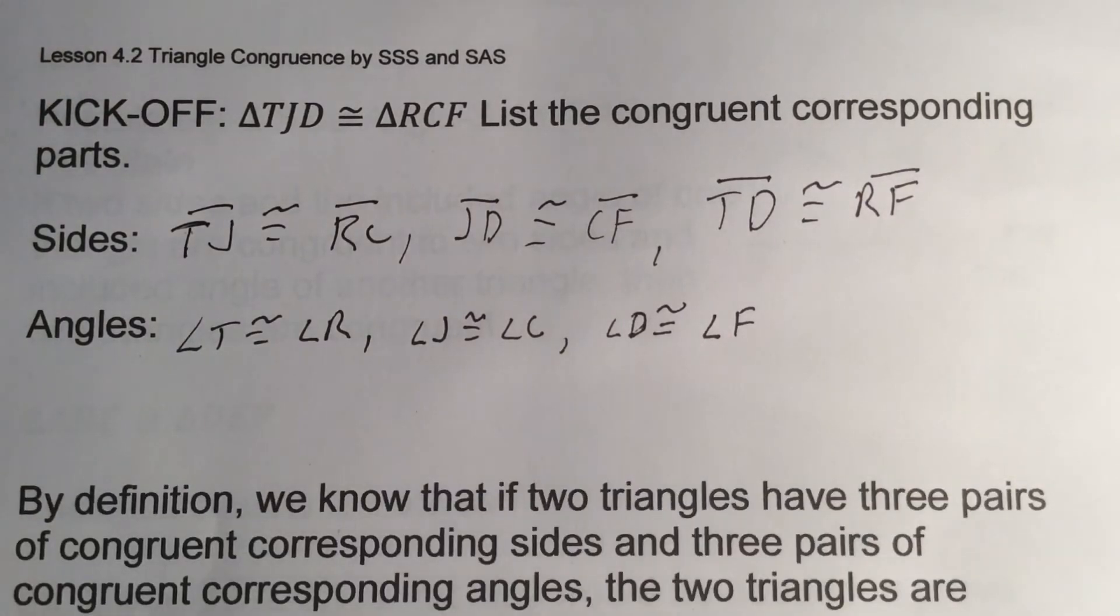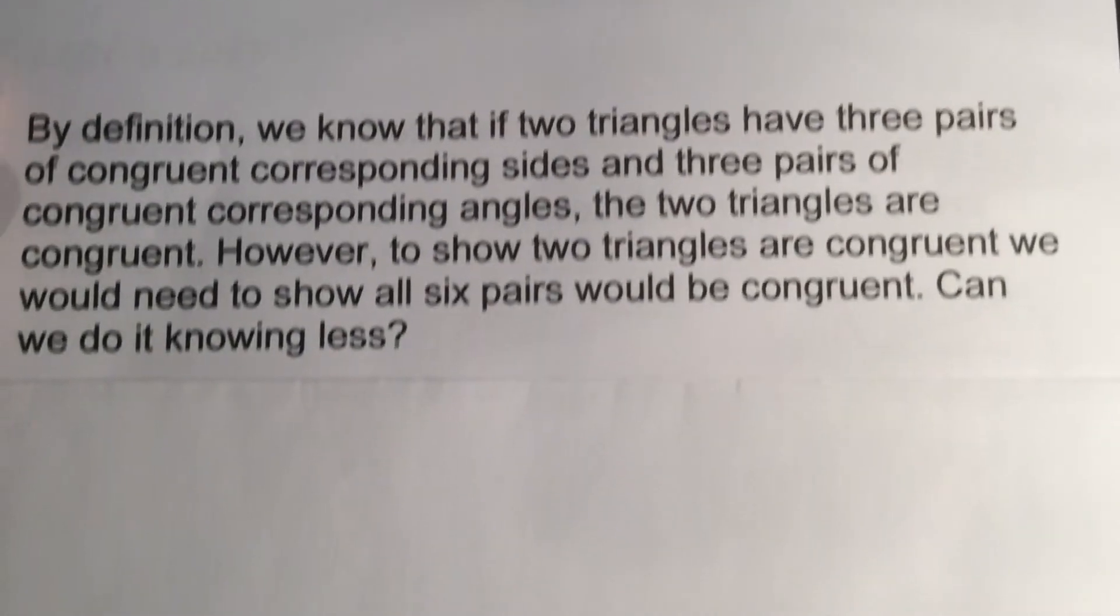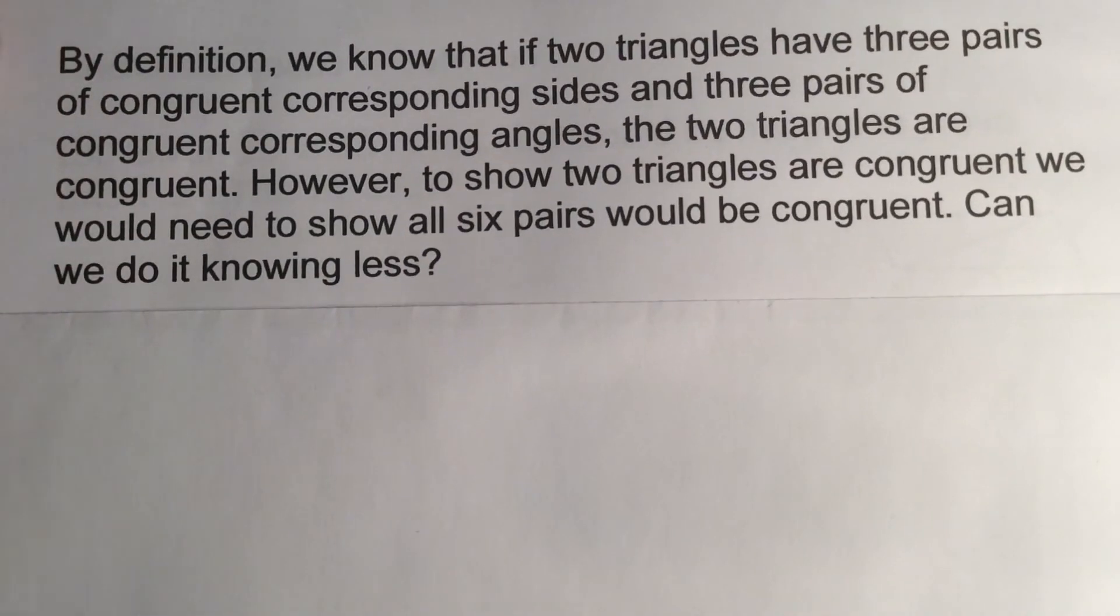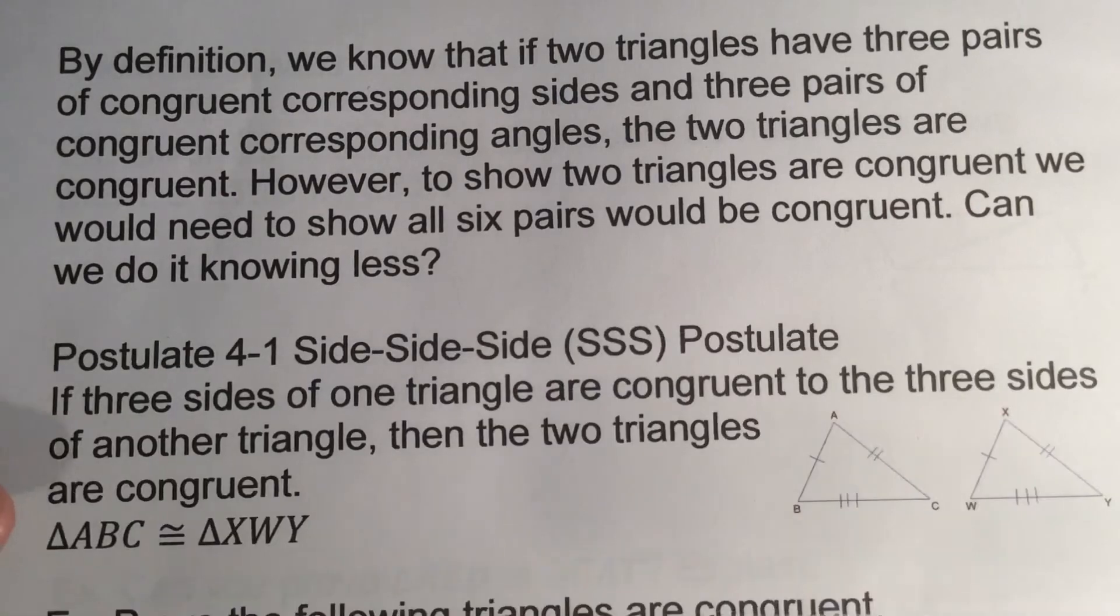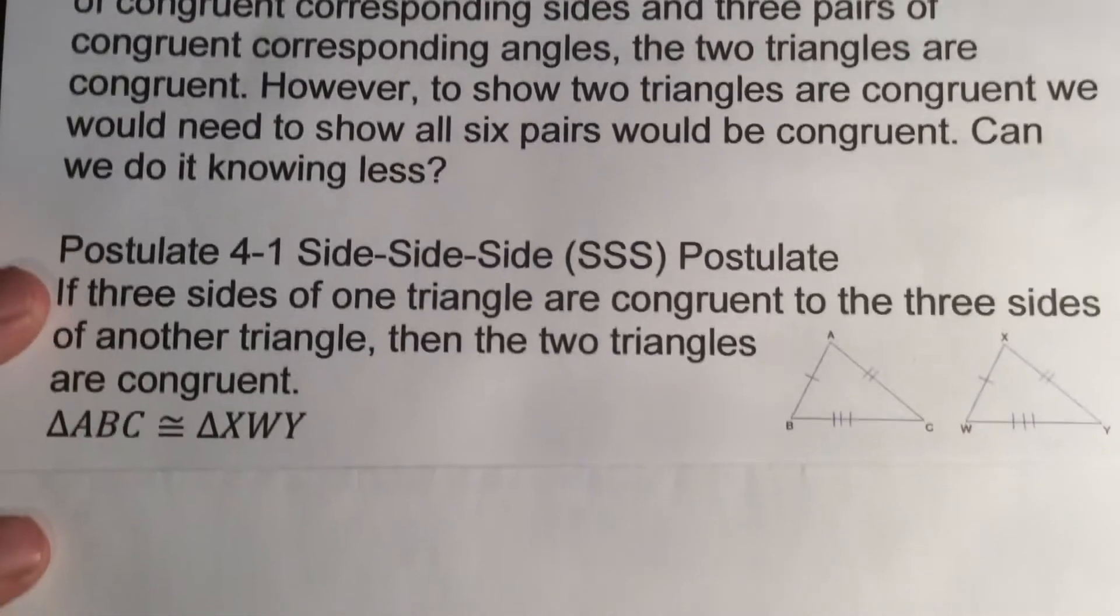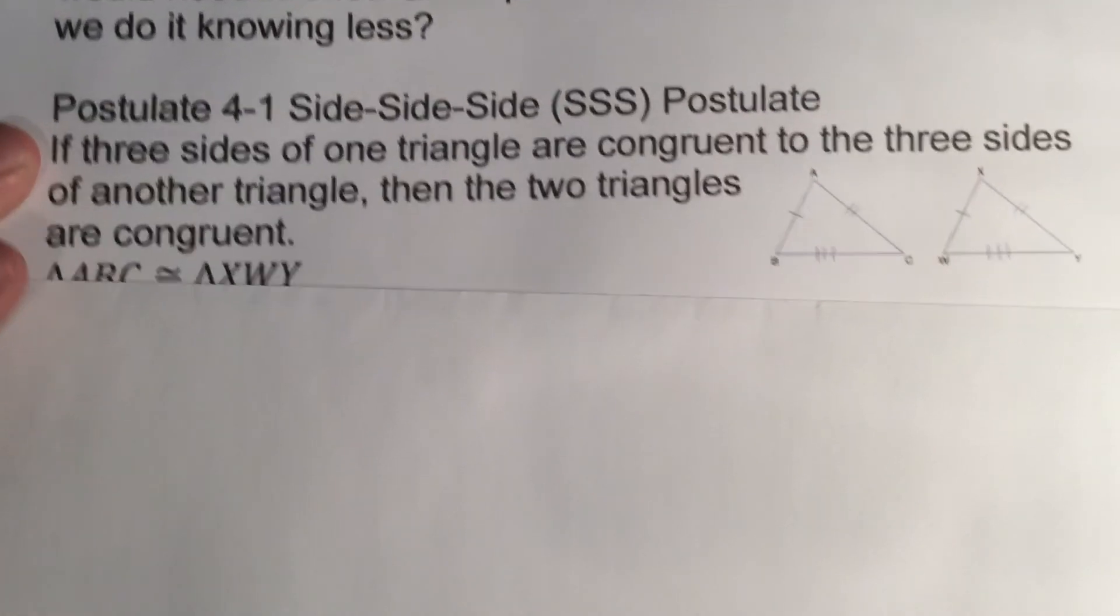By definition, we know if two triangles are congruent, we have three pairs of corresponding sides, three pairs of corresponding angles. If all that's true, then we know the two triangles are congruent. However, to show two triangles are congruent, we don't always need to show all six pairs. We can show it doing less, starting with our postulate 4-1, which is the side-side-side postulate.